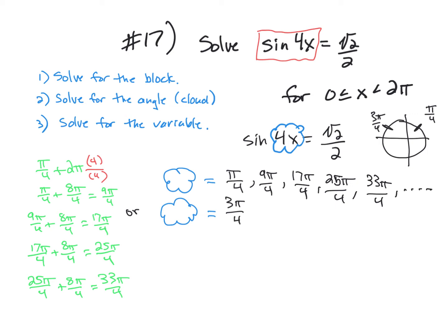So that takes care of all of the angles that are coterminal with this. So here's π over 4, come around the circle, that's 9π over 4. Around the circle again, it's 17π over 4, 25π over 4, 33π over 4, and so forth.